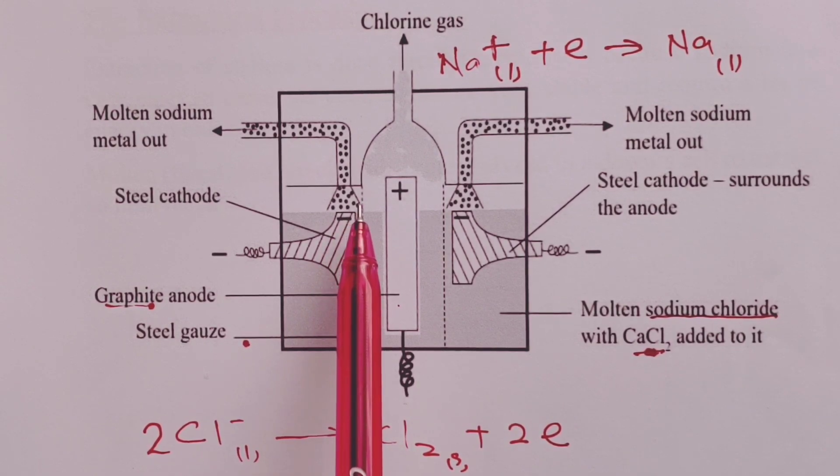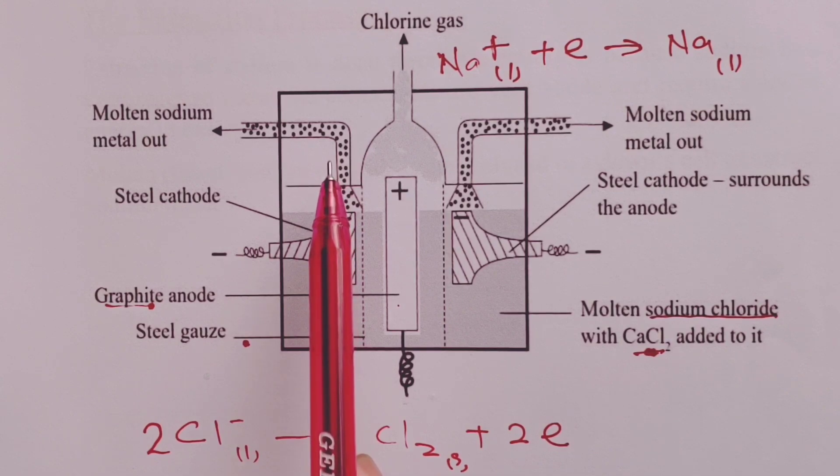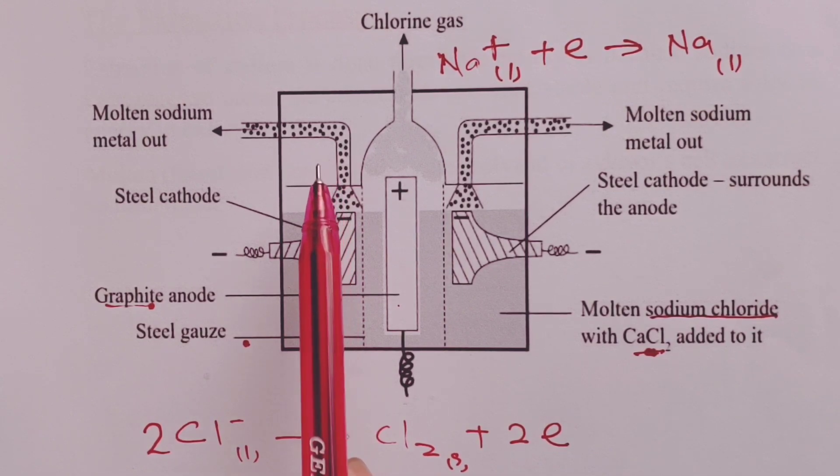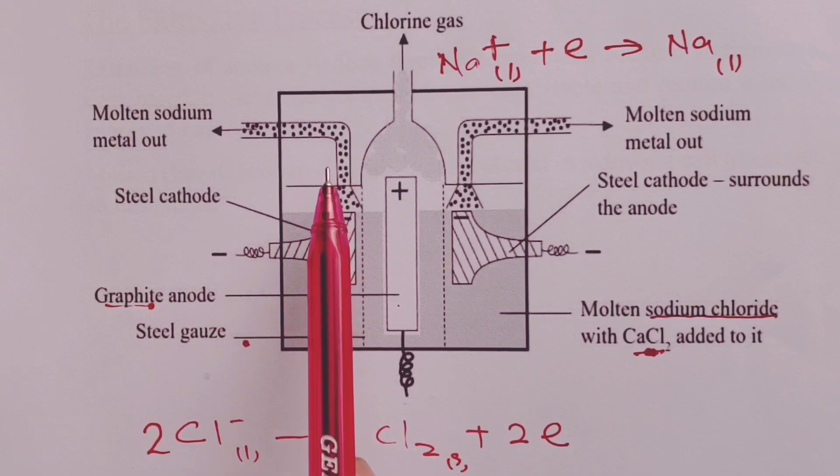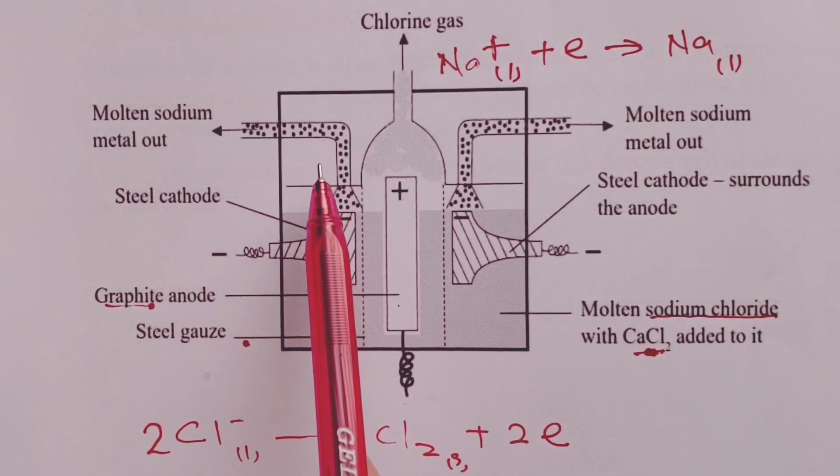It is therefore siphoned off, cooled, and cast into blocks. Then these blocks are stored in paraffin oil to prevent sodium from reacting with atmospheric oxygen or water vapor.